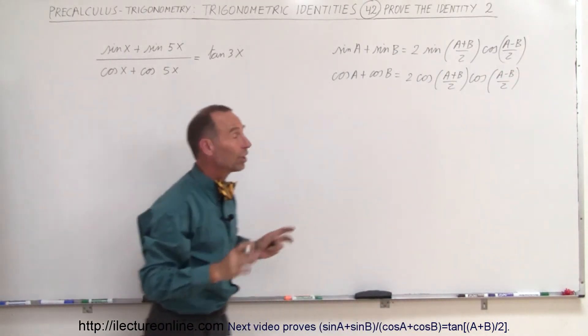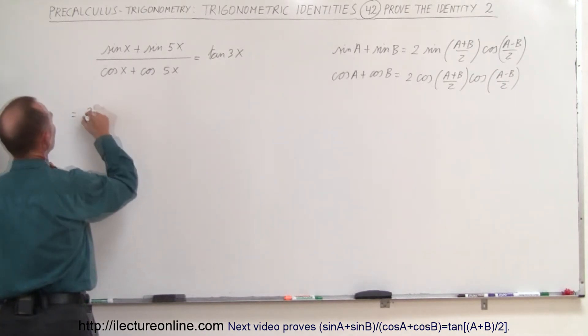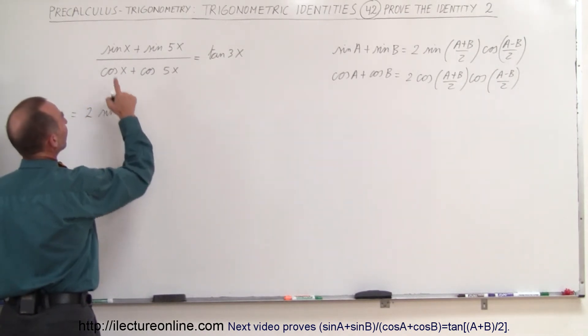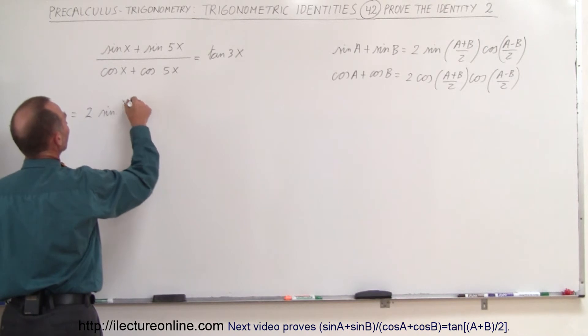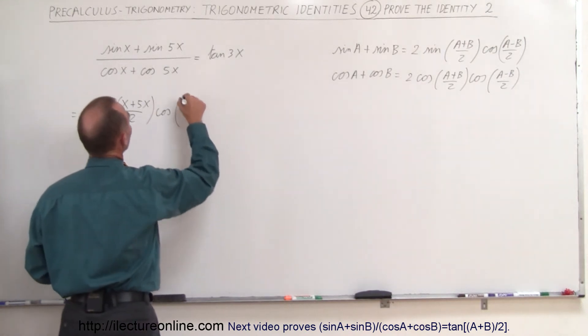Now that we have those two general equations let's apply them here. So this can now be written as 2 times the sine of the sum divided by 2 which would be x plus 5x divided by 2 times the cosine of the difference which is x minus 5x divided by 2.